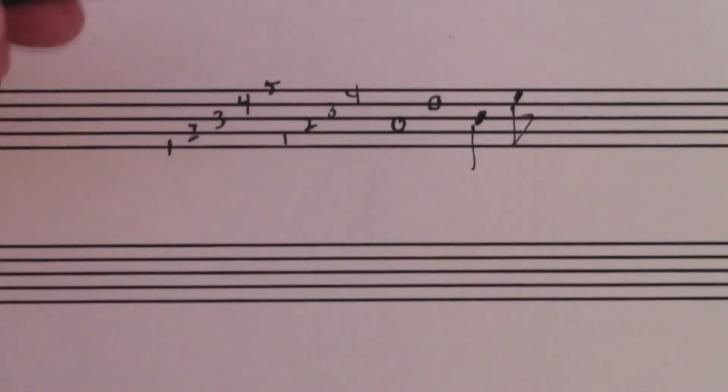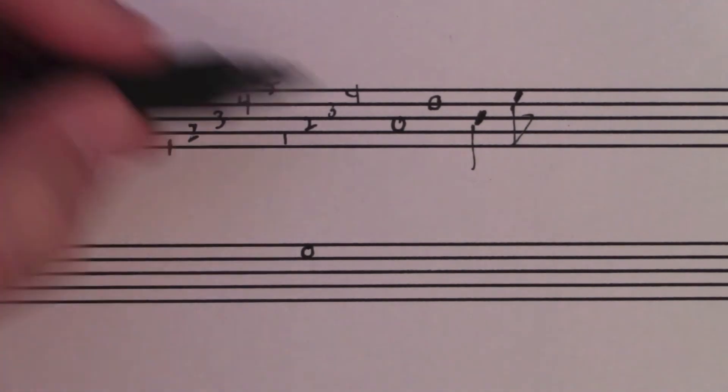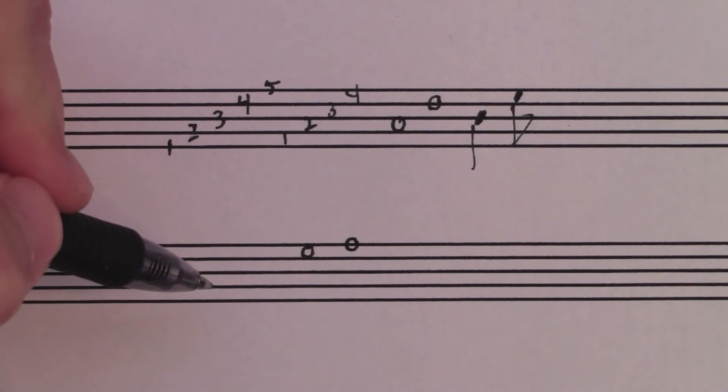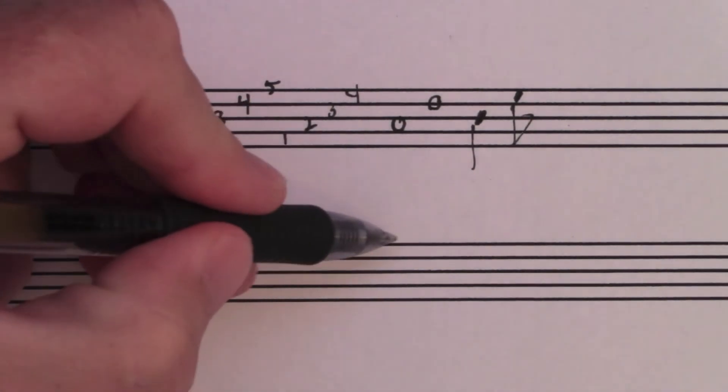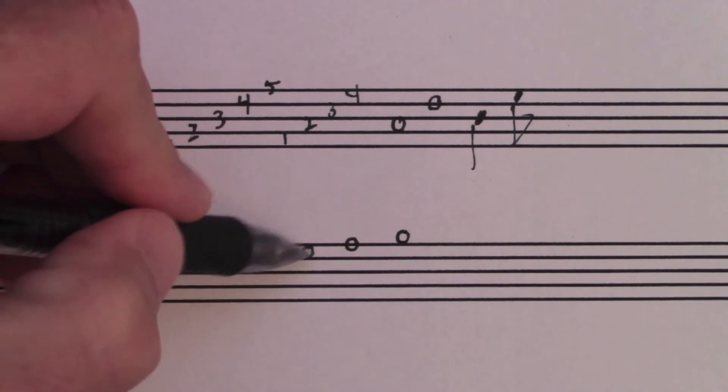And actually, we can go beyond the staff. Here's the top space in the staff. Here's the top line in the staff. Well, if we go up one more, it'll be another space note because we alternate space, line, space.